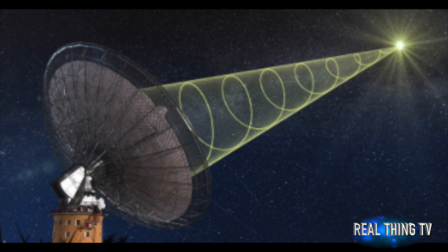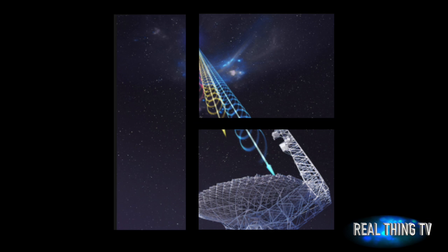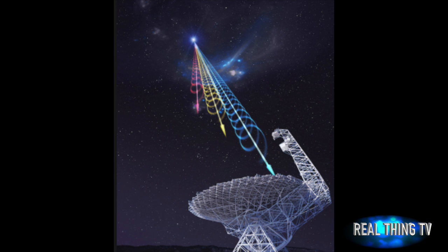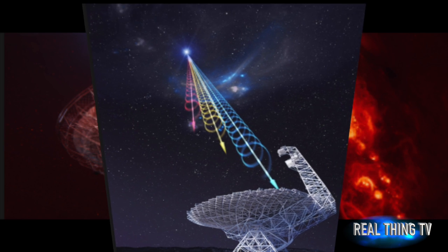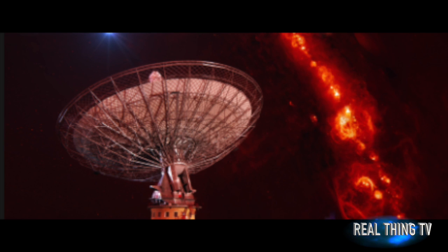The location is called FRB-121102. This is the only known repeater of fast radio bursts, FRBs - radio emissions that appear temporary and randomly.